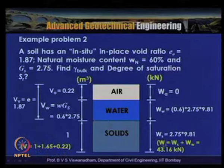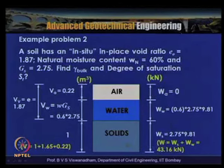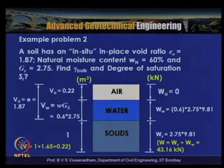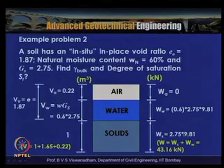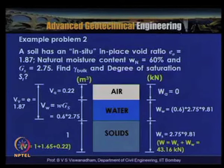We are given the natural water content of 60%. Using the definition of specific gravity Gs = γs / γw, and taking γw = 9.81 kN/m³, we can write Ws = Gs × Vs × γw. With Vs = 1, Ws = 2.75 × 9.81. From the definition of water content (weight of water to weight of solids), the weight of water is 0.6 × 2.75 × 9.81.